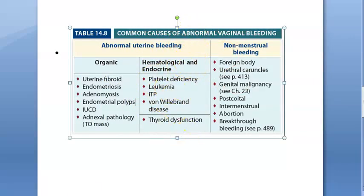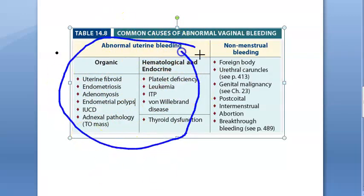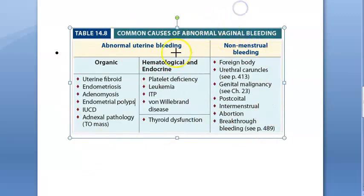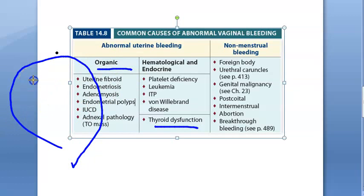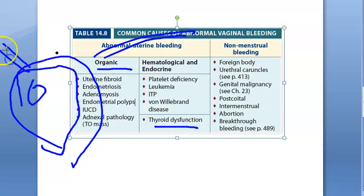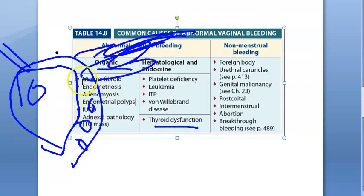Now, the causes of abnormal vaginal bleeding can be menstrual or non-menstrual. Causes include coagulopathies such as platelet deficiency, leukemia, idiopathic thrombocytopenic purpura, or von Willebrand disease. Endocrine causes include thyroid dysfunction. Organic causes include uterine fibroids, endometriosis — where endometrial glands sit outside the uterus — and adenomyosis, where the glands are within the uterine wall.